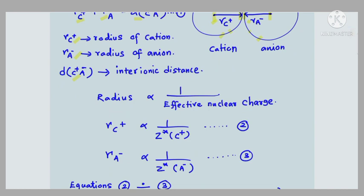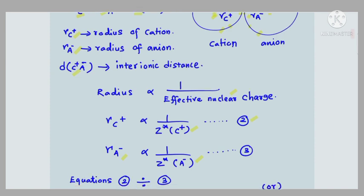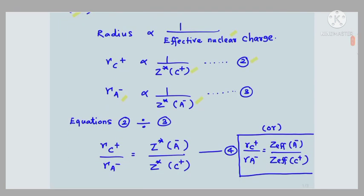Generally in atoms or ions, the radius is inversely proportional to effective nuclear charge — the greater the effective nuclear charge, the lesser will be the radius. If the effective nuclear charge is greater, the force of attraction between the valence electron and nucleus is more, causing contraction in size. Applying this: radius of cation is inversely proportional to Z*(C⁺) — equation two; radius of anion is inversely proportional to Z*(A⁻) — equation three.